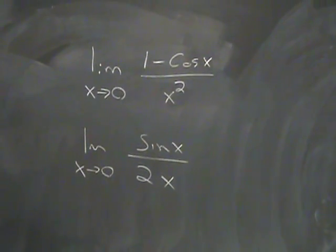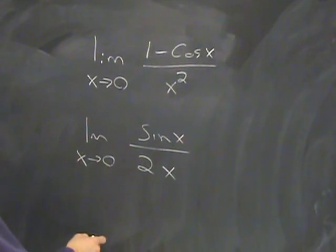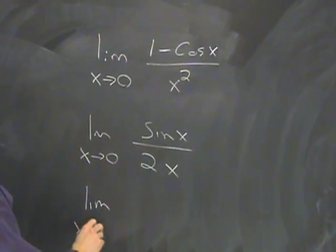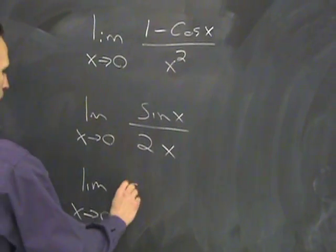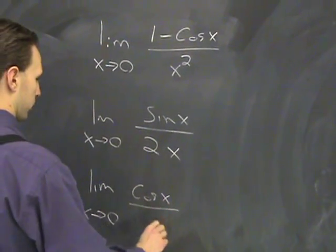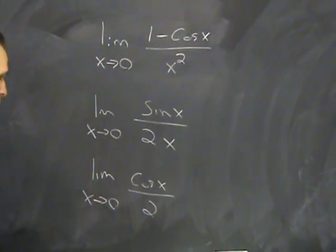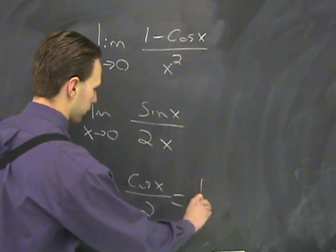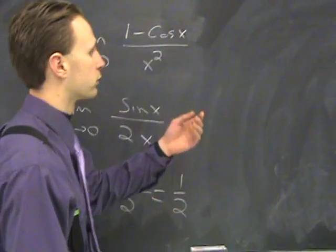But that's good, because we can just do L'Hôpital's rule again. We got 0 over 0, it's indeterminate, so do it again. The derivative of sine is cosine. The derivative of 2x is 2. As x goes to 0, the cosine of 0 is 1, and this limit is 1. So you can do it as many times as is necessary.